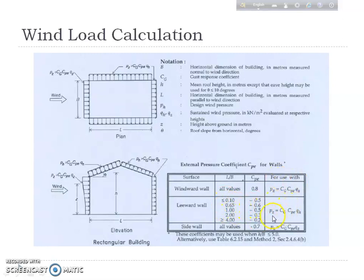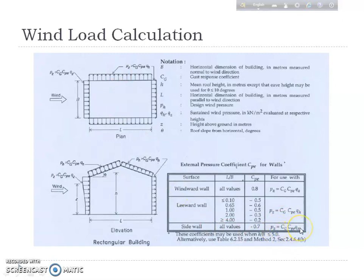For the leeward wall, CP changes with the l/b ratio. The formula used is PZ = CG × CP × QH, where QH is evaluated at the mean height. For example, if the eave height is 5 meters and ridge height is 10 meters, the mean height = (10 + 5)/2 = 7.5 meters. For sidewalls, the suction pressure uses PZ = CG × CP × QZ.